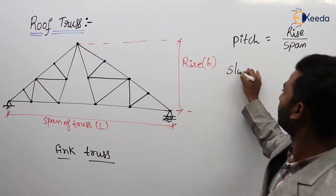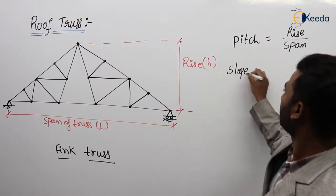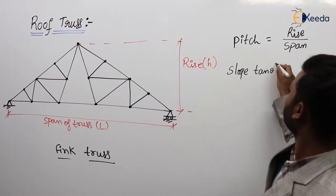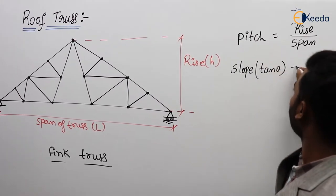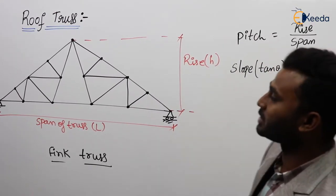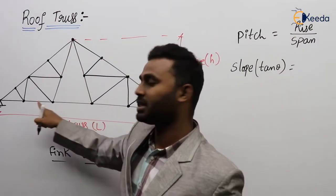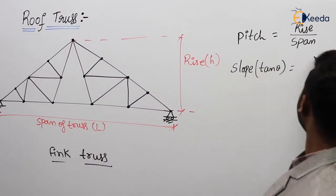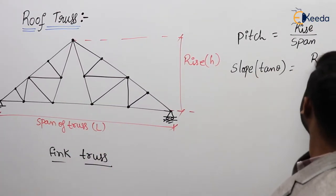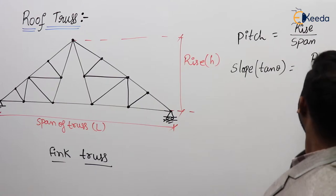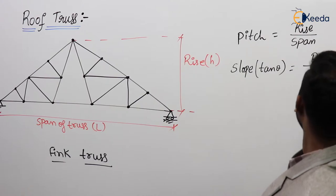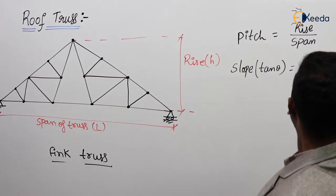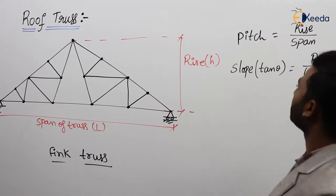Next, slope. Slope is tan theta. Obviously, tan theta is equal to opposite side divided by adjacent. The opposite side is H, that is the rise, and the adjacent side is span divided by 2.